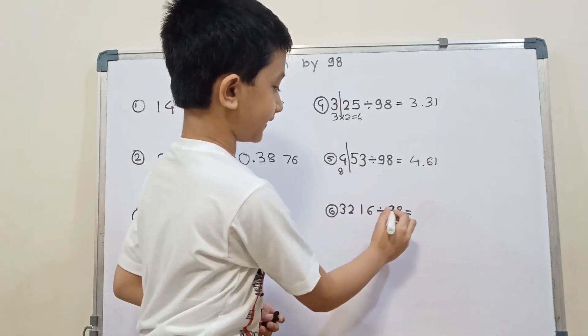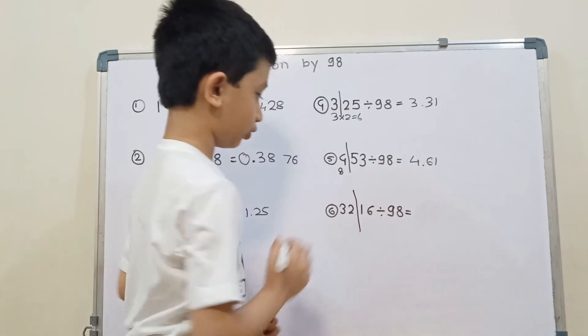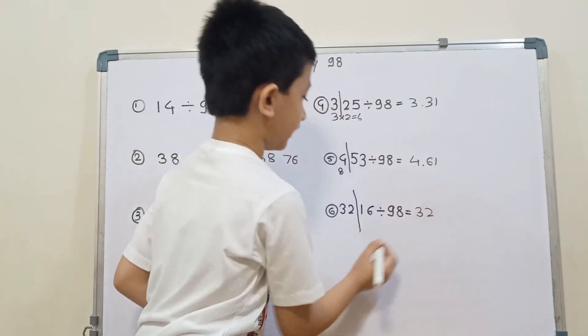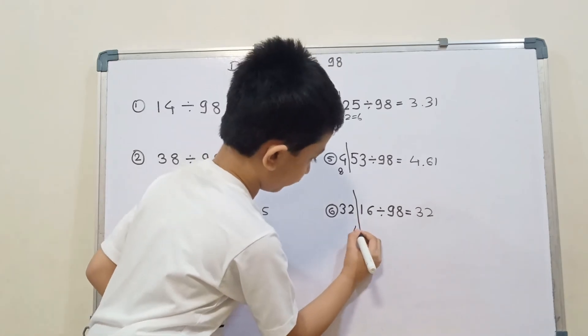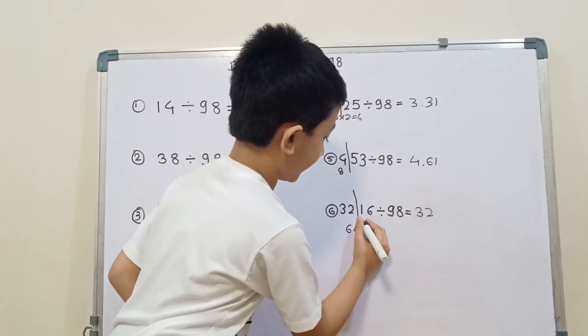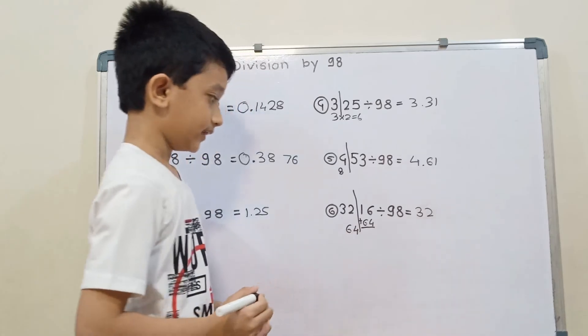Now, 3216 divided by 98. First we will divide it into 2 parts. Then we will write 32. And then the double of 32 is 2 times 2 is 4. And 3 times 2 is 6. And then we will add 64 plus 16.